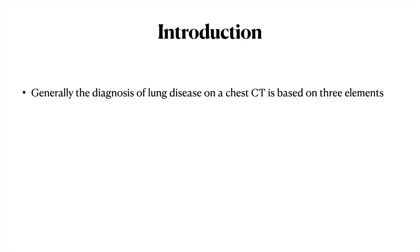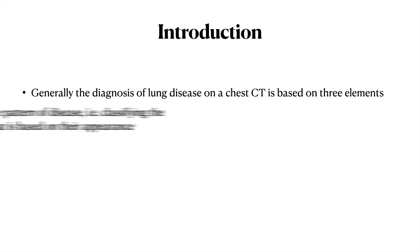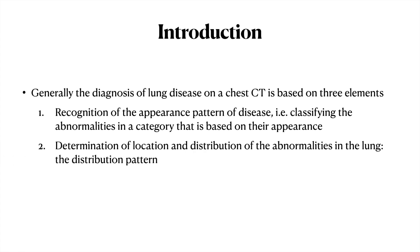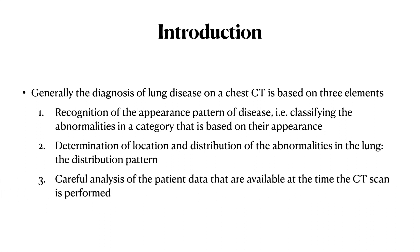Generally the diagnosis of lung disease on a CT scan is based on three important elements. The first is recognition of the pattern of the disease, classifying the abnormalities into a category based on the appearance of the CT scan. The second is determination of the location and distribution of the abnormalities in the lung. And lastly, but most importantly, a careful analysis of the patient data available at the time of the CT scan.